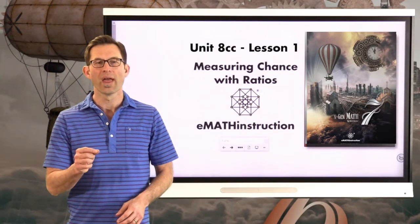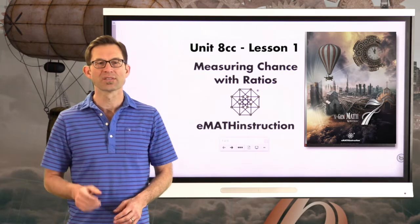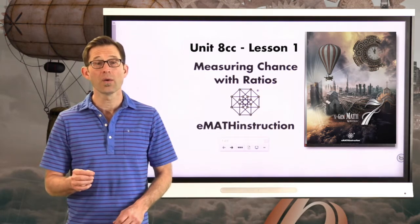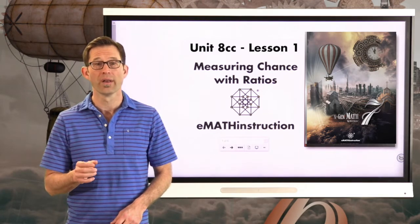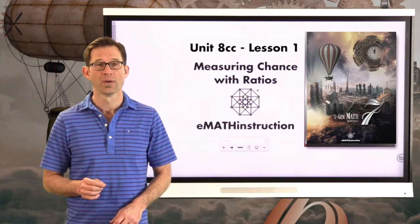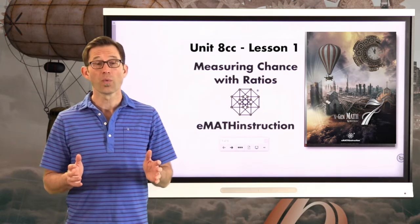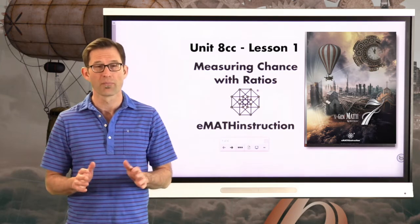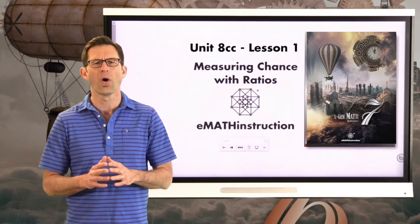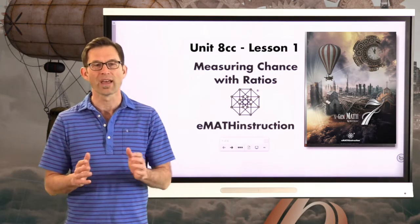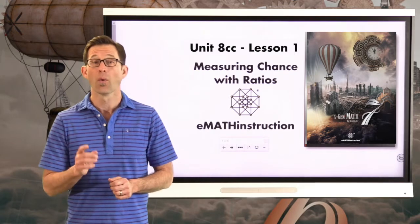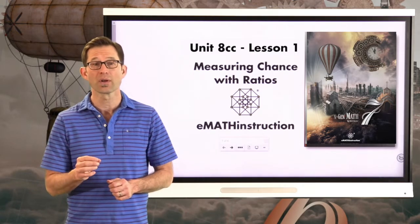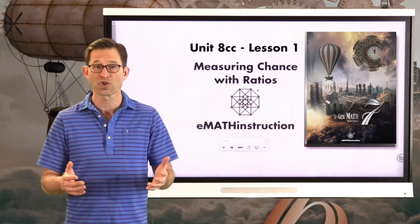Hello and welcome to another NGen Math 7 lesson by EMath Instruction. My name is Kirk Weiler and today we're going to be doing Unit 8CC, Lesson 1: Measuring Chance with Ratios. Unit 8CC is our last unit in Math 6 and it's on probability. Probability is all about measuring the chance that something happens, and we're going to see that often times that measurement occurs with a ratio — with a fraction.